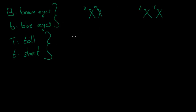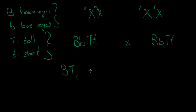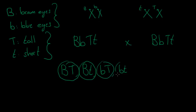If we cross two individuals that are both heterozygous, the gametes for each person will be: capital B with capital T, capital B with small t, small b with capital T, and small b with small t — four different gametes. If you cross them you get the ratio 9:3:3:1, where 9 is brown and tall, 3 is brown and short, 3 is blue eyes and tall, and 1 is blue and short.